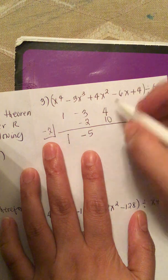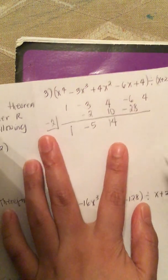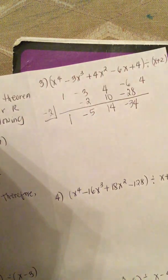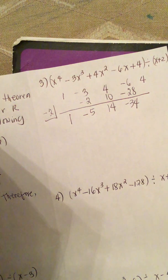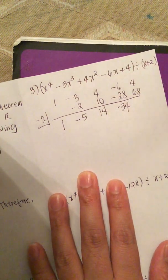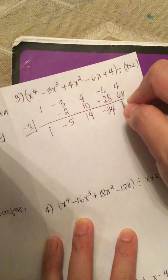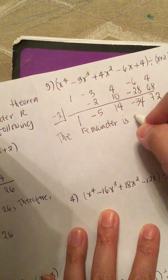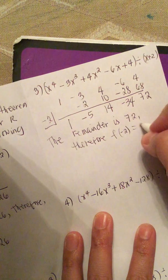4 plus 10 is 14. Then 14 times negative 2 is minus 28. And negative 6 minus 28 is minus 34. Then minus 34 times negative 2 is positive 68. And 4 plus 68 is equal to 72. So the remainder is 72. Therefore, f of negative 2 is equal to 72.